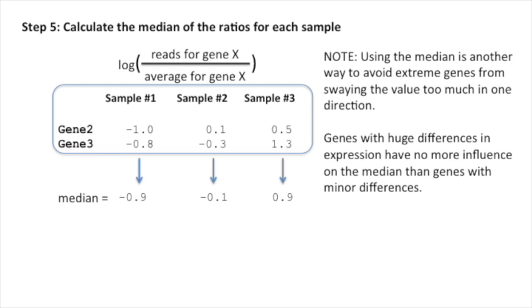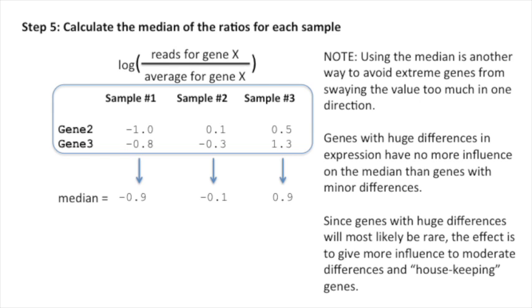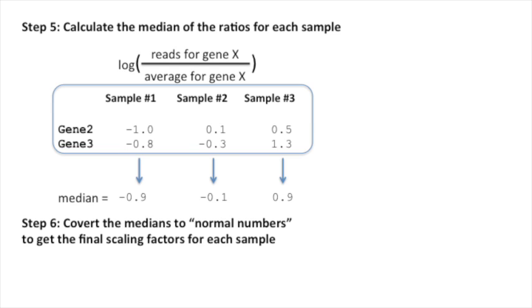Genes with huge differences in expression have no more influence on the median than genes with minor differences. Since genes with huge differences will most likely be rare, the effect is to give more influence to moderate differences and housekeeping genes.